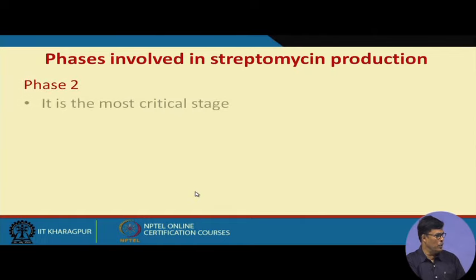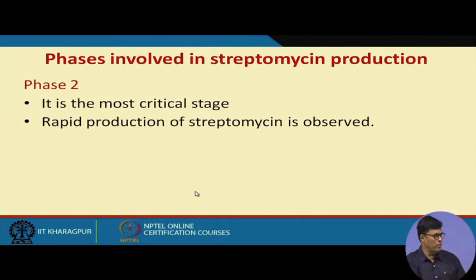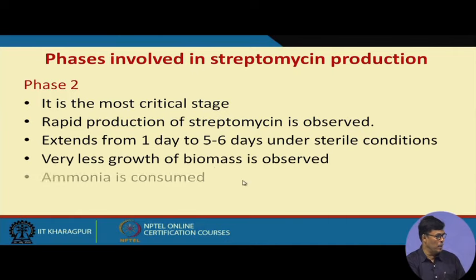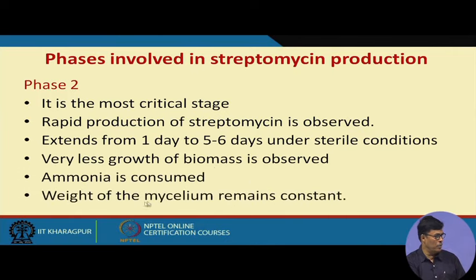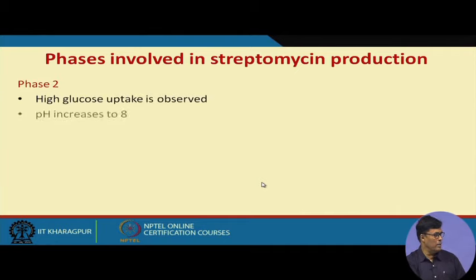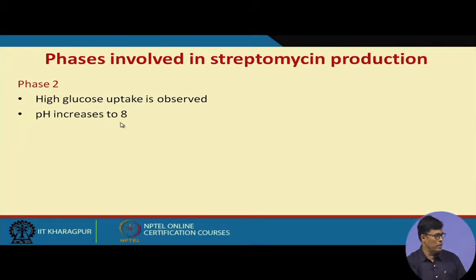Phase 2 is the most critical phase. Rapid production of streptomycin is observed, extending from day 1 to days 5 to 6 under sterile conditions. Very little growth of biomass is observed. Ammonia is consumed and the weight of mycelia remains constant, as this is also a secondary metabolite production phase occurring at the stationary phase. This phase involves high glucose uptake and pH increases to 8.